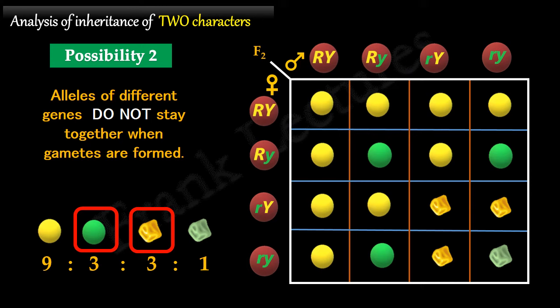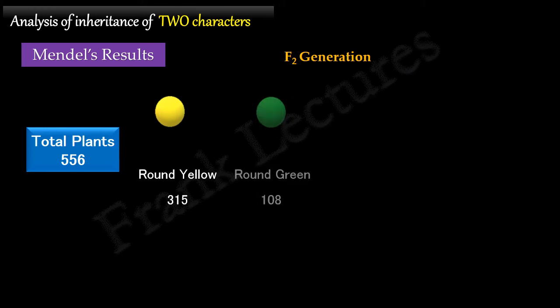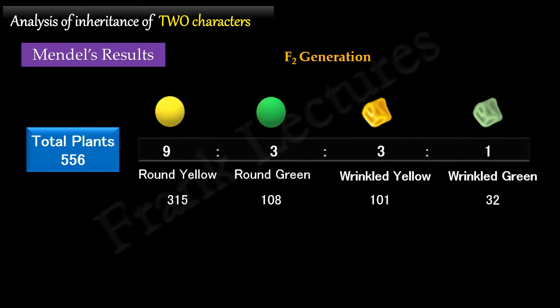Mendel obtained the same results in his dihybrid cross experiment. Among these, 315 were plants with round yellow seeds, 108 with round green seeds, 101 with wrinkled yellow seeds, and 32 with wrinkled green seeds. The ratio calculated is nearly 9:3:3:1. This explains that for the inheritance of alleles for more than one character, the second possibility is true.